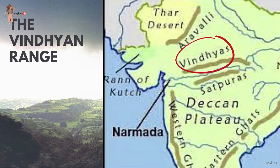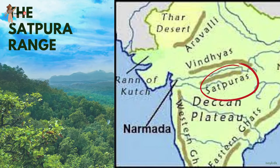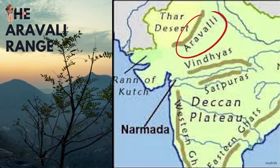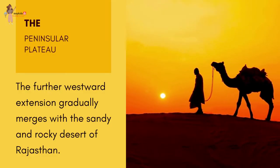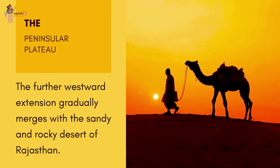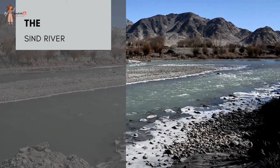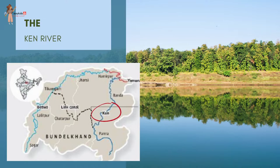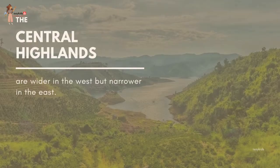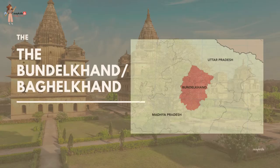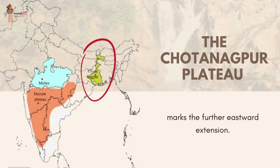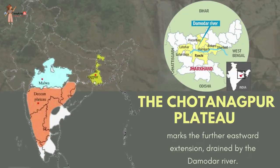The Vindhyan range is bounded by the Satpura range on the south and the Aravallis on the northwest. The further westward extension gradually merges with the sandy and rocky desert of Rajasthan. The rivers draining this region — the Chambal, the Sind, the Betwa and the Ken — flow from southwest to northeast, indicating the slope. The Central Highlands are wider in the west but narrower in the east. The eastward extensions are locally known as the Bundelkhand and the Baghelkhand. The Chota Nagpur Plateau marks the further eastward extension, drained by the Damodar river.